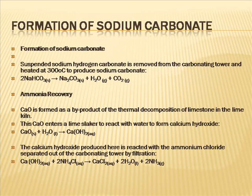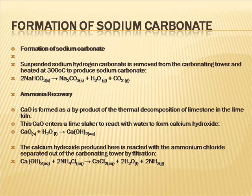Formation of sodium carbonate. Suspended sodium hydrogen carbonate is removed from the carbonating tower and heated at 300°C to produce sodium carbonate: 2NaHCO3(s) → Na2CO3(s) + H2O(g) + CO2(g). Ammonia recovery follows.